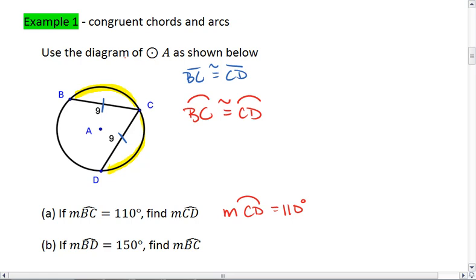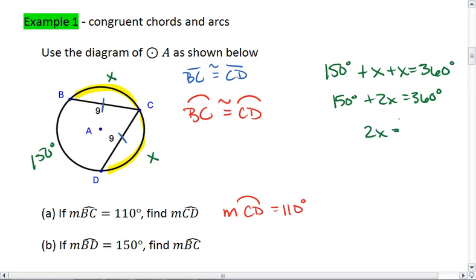Now let's look at part b. So completely new problem. If measure of arc BD is 150 degrees, we want to find the measure of arc BC. Well, we know that whatever BC is, CD is the same, and that the total degrees in the circle are 360. So we see that 150 degrees plus x plus x equals 360 degrees, meaning that 150 plus 2x equals 360. 2x equals 360 minus 150, which is 210. x is going to equal 105 degrees. So the measure of arc BC, which is the same as the measure of arc CD, is 105 degrees.